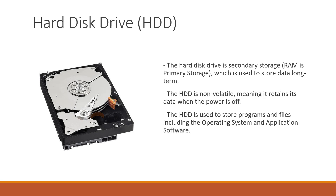When we want to store data stored in RAM, we use a secondary storage device. The hard disk drive is where most data is stored in a computer system, as it has a large capacity, meaning it can store lots of data, and hard disks are relatively cheap and reliable. The hard disk drive is non-volatile, meaning that it stores data even when the computer's power is off.